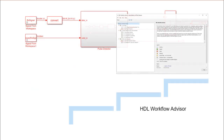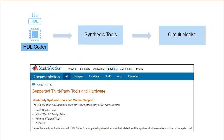In the next step, we will utilize the HDL Workflow Advisor to generate the HDL code. To synthesize the generated VHDL or Verilog code, we will use a third-party tool — in our case, Xilinx Vivado.